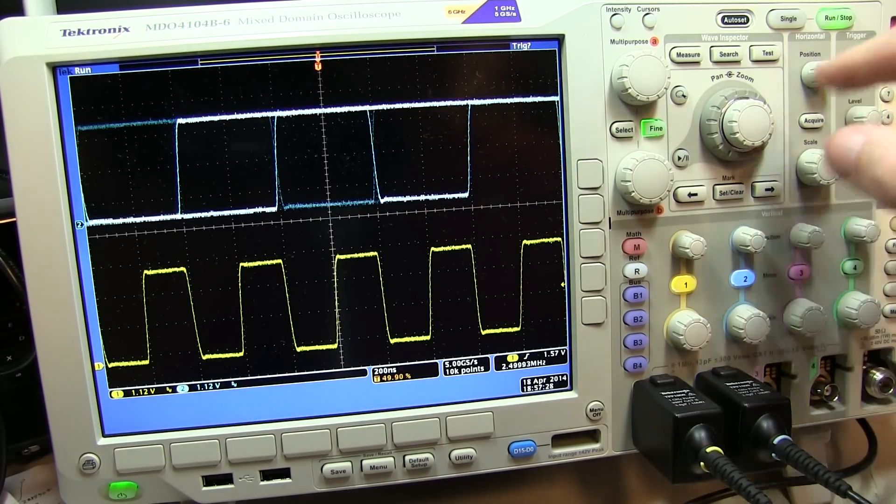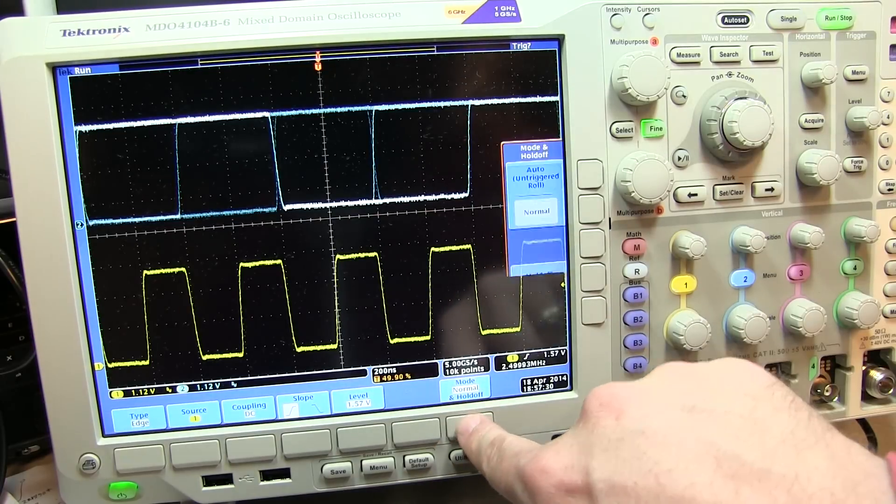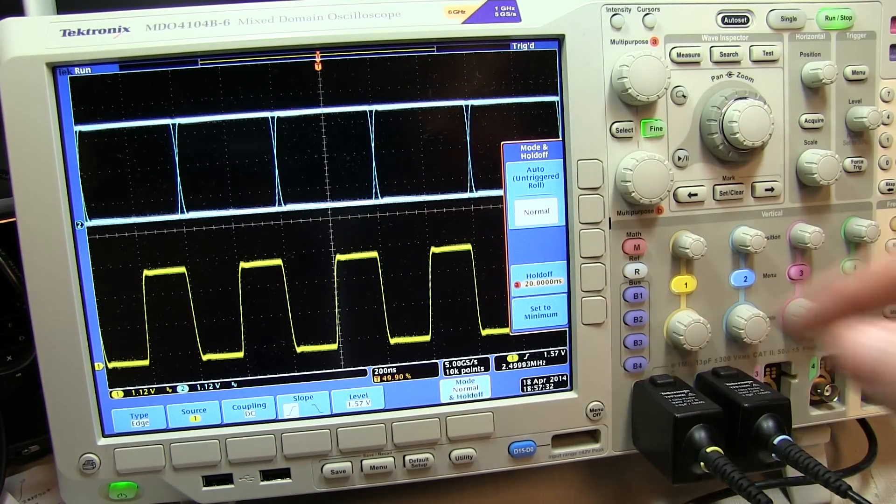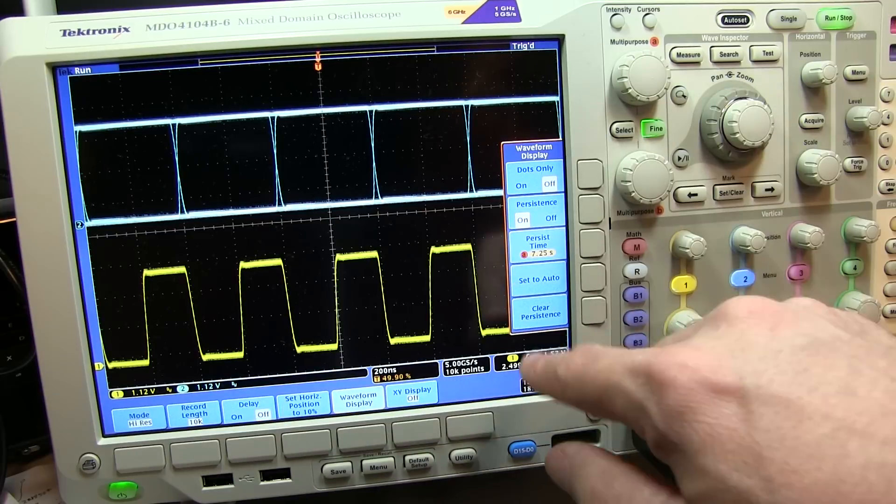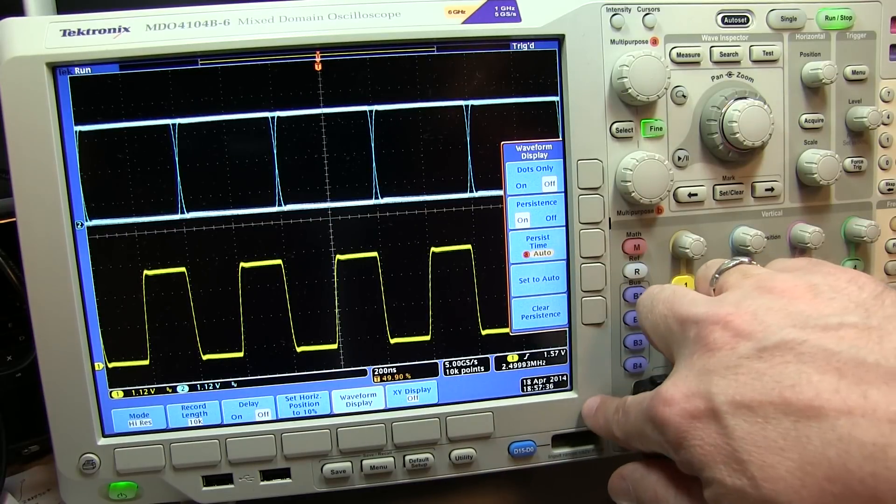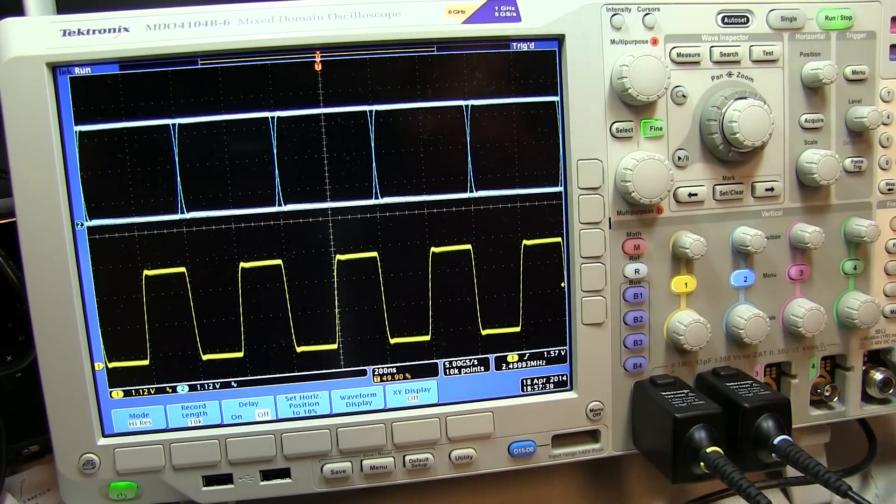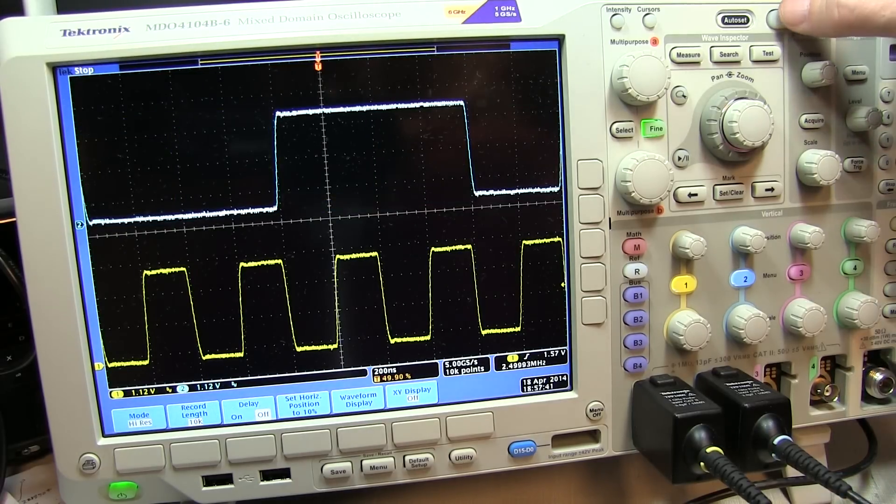If I go back to the trigger menu here, and I change the hold off back to its minimum value, and we'll just go set the persistence time back to auto, we can see that that's really what this eye pattern is built up as.